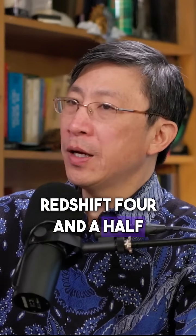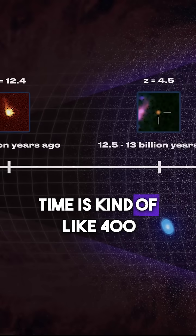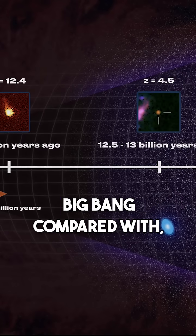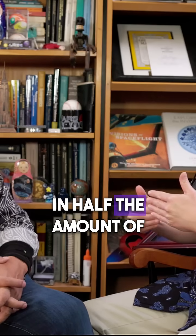The difference between redshift 4.5 and redshift 12 in a galaxy's timeline is kind of like 400 million years after the Big Bang compared with 800 million years after the Big Bang. You're basically cutting in half the amount of time you're letting a galaxy grow.